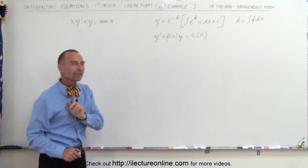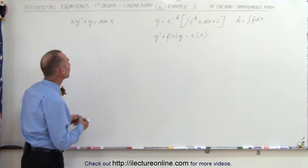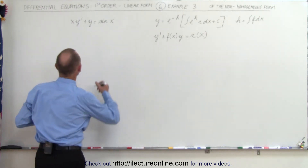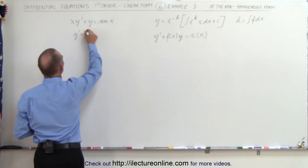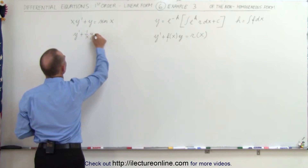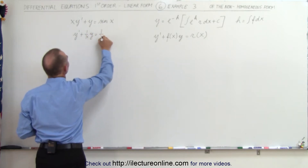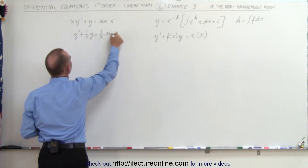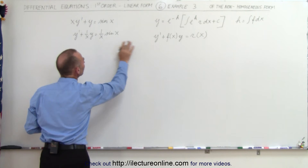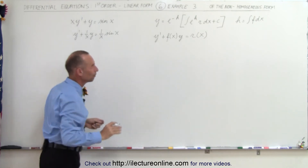So we're going to divide both sides of the equation by x. When we do that we get y prime plus 1 over x times y equals 1 over x times the sine of x, and now this is in the general form.